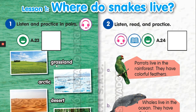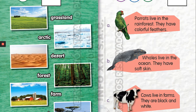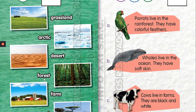The next habitat is: arctic. El ártico — arctic. Next: desert. Desert — desierto.